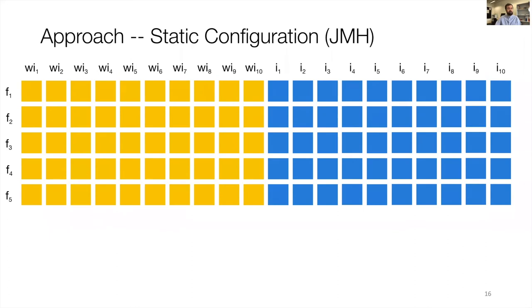The approach of how JMH currently works — the static configuration — looks like this: we have a predefined number of warm-up iterations, measurement iterations, and forks before we start executing the benchmarks, and the configuration stays fixed during execution. Our idea is to dynamically reconfigure this static configuration. For this, we run a minimum number of iterations, and then we arrive at a stoppage point where we decide whether the fork is already in a steady state.